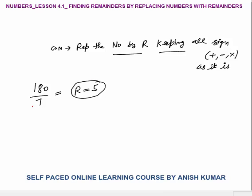Now we will break this number: 180 is 18 into 10. Apply the concept — replace number with remainder. 18 divided by 7: 7 twos are 14, remainder is 4. 10 divided by 7: 7 ones are 7, remainder is 3.